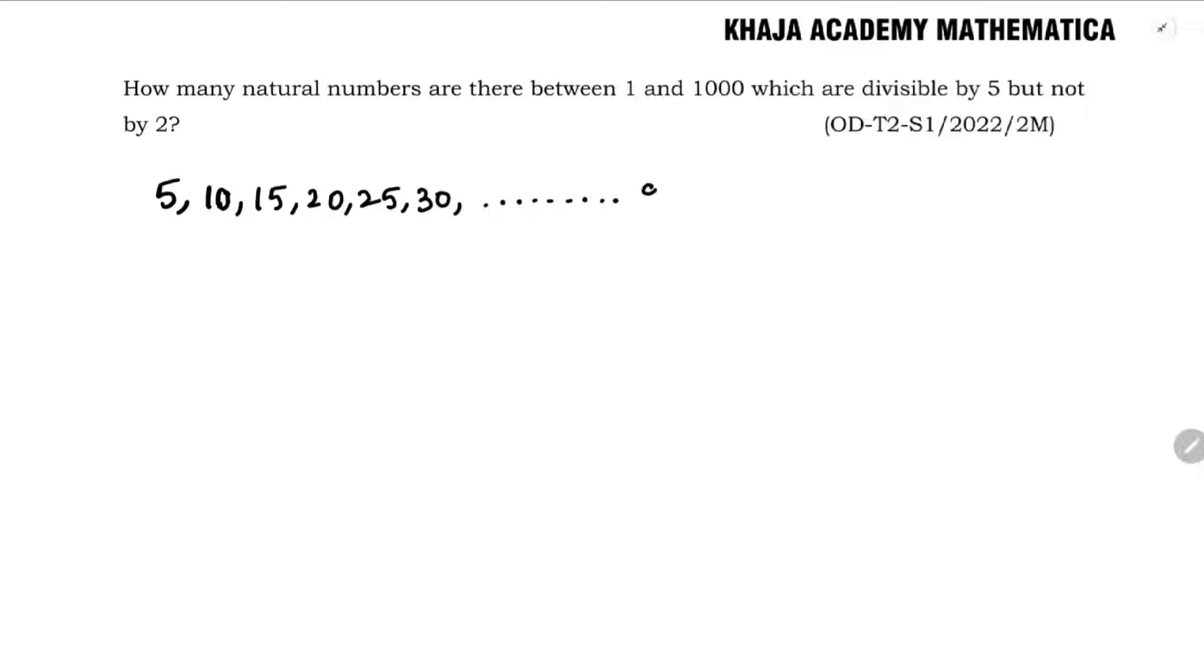The last number will be between the two, so 995. These all are the numbers which are divisible by 5. But they are told we should not be divisible by 2. So see, this is the number which is divisible by 2, so I will take out these numbers.